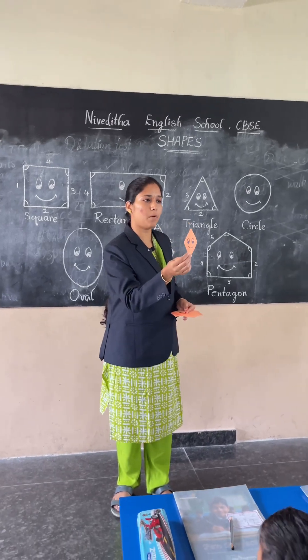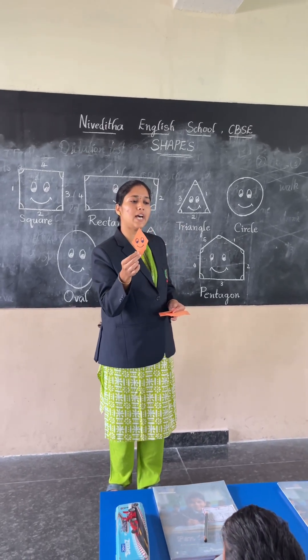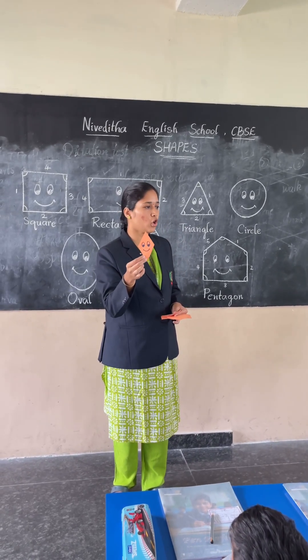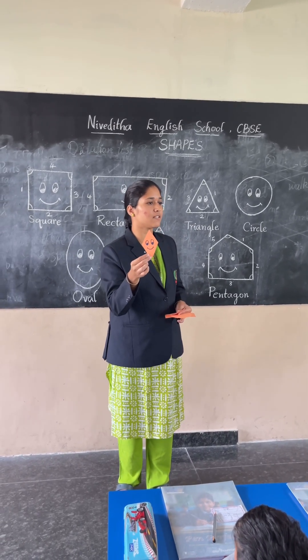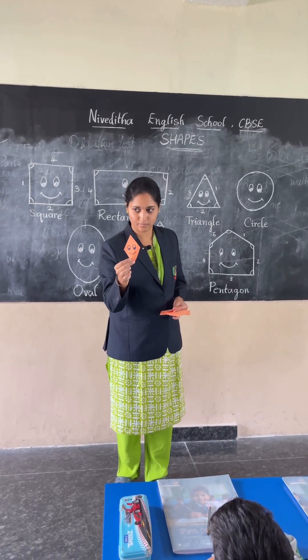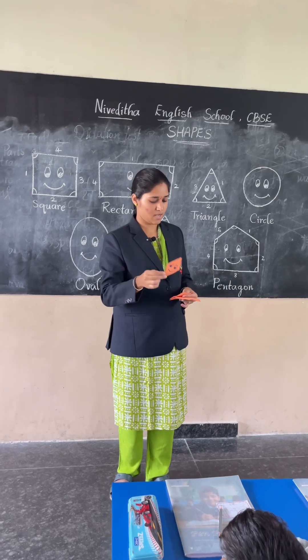This is a rhombus. It has four sides and four corners.